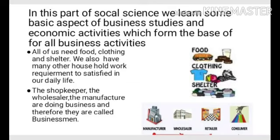Look at the picture children, where you are seeing food, clothing, shelter and many more things which we need for satisfying our daily life needs. Where do we get these goods? We get from the shopkeeper. And where does the shopkeeper get? He gets from the wholesaler. And where does the wholesaler get things? He gets things from the manufacturer. So, what are these shopkeeper, retailer and manufacturer involved in? They are involved in doing business, so they are called businessmen.